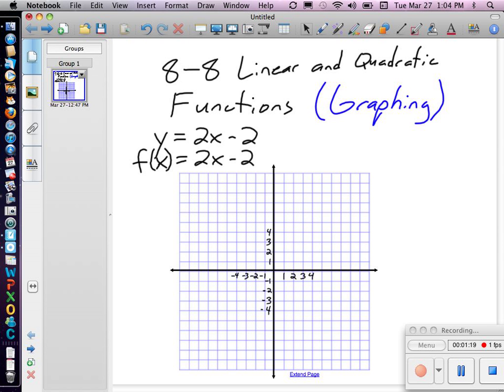And these are pretty simple to graph. You just put a dot at the y-intercept, which would be negative 2 in this case. And then the slope is 2 over 1, or it could also be negative 2 over negative 1. So I can go up 2 from here and to the right 1, up 2 and to the right, up 2 and to the right, and I could keep doing that. And I could also go down 2 and to the left, down 2 and to the left, and so on. And that is the graph of this linear function.